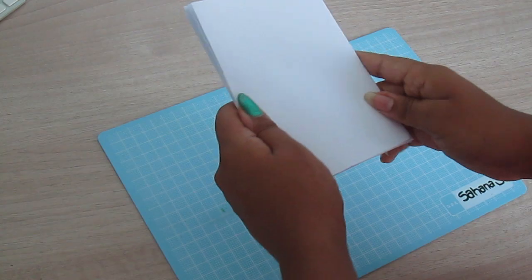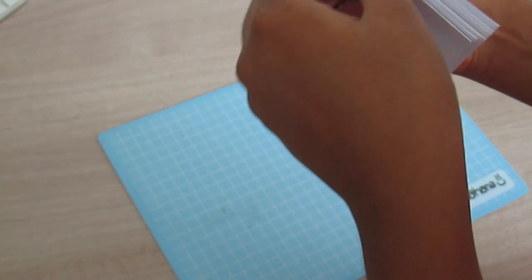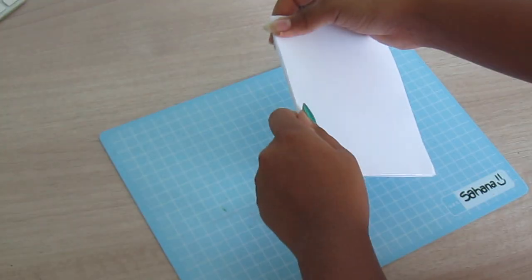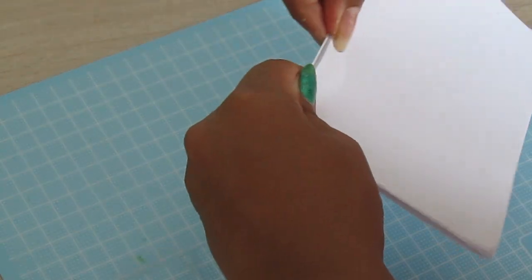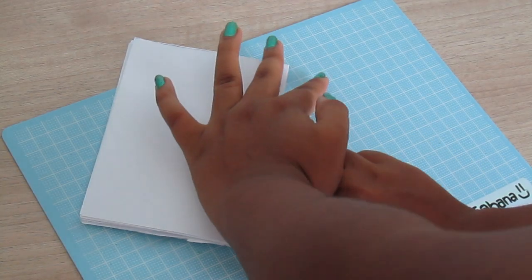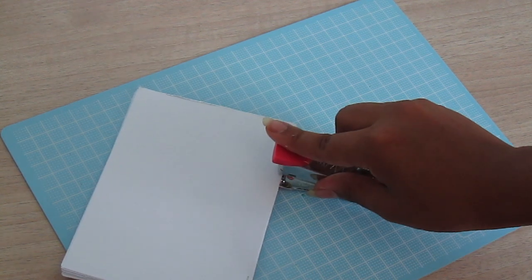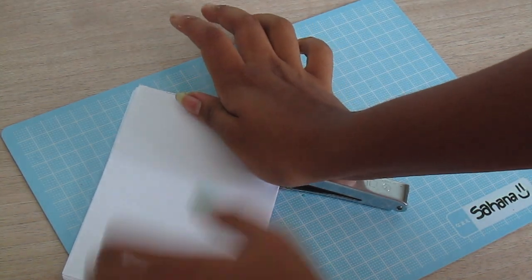Now gather them together and make sure that the loose part is on the right and the closed folded part is on the left. Tighten it and make it all together so it's neat. You want to take the edge and staple it on both sides of the book so it's all together. This is basically the base for your book.